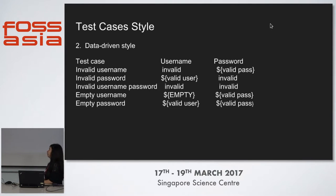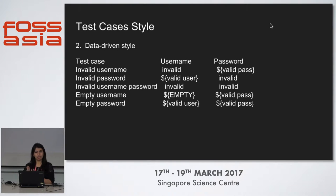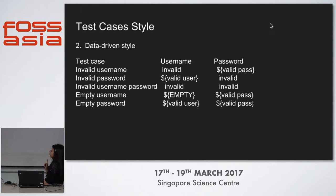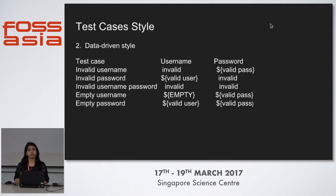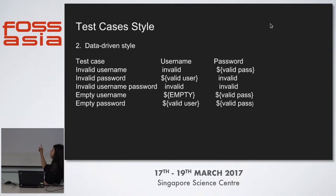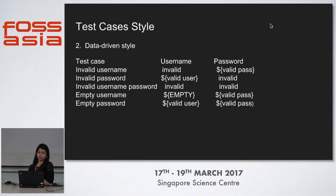In the data driven approach, suppose we are given a login page and need to test it with every possibility: invalid username, valid password, invalid password, invalid username. We need to cover each and every condition. In data driven approach, we cover all those conditions with different sets of data. This test style is used when we need to test the same scenario with different datasets. We define the different arguments in a user table so that we can use them in our test scenarios.